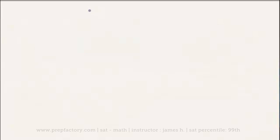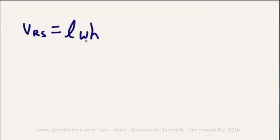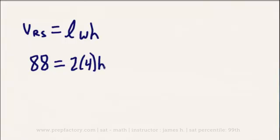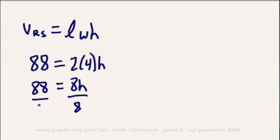The first problem reads: if a rectangular solid has a length of 2 feet, a width of 4 feet, and a volume of 88 cubic feet, what is its height? The volume equals length × width × height, so 88 = 2 × 4 × h, which gives us 88 = 8h. Dividing both sides by 8, we get a height of 10 feet. That wasn't too difficult — just using our basic formulas. Now let's look at a much more difficult cylinder problem.